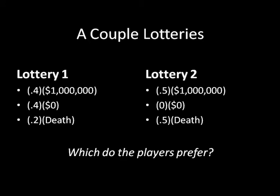Here's a couple of lotteries: lottery one and lottery two. In lottery one, with probability 0.4 you get a million dollars, with probability 0.4 you get zero dollars, and with probability 0.2 you die a painful death. Meanwhile, over in lottery two, with probability 0.5 you win a million dollars, and with probability 0.5 you die a painful death. And I ask which do the players prefer?